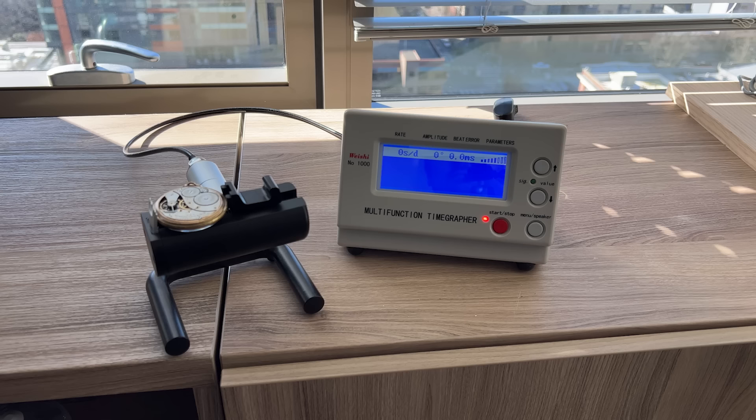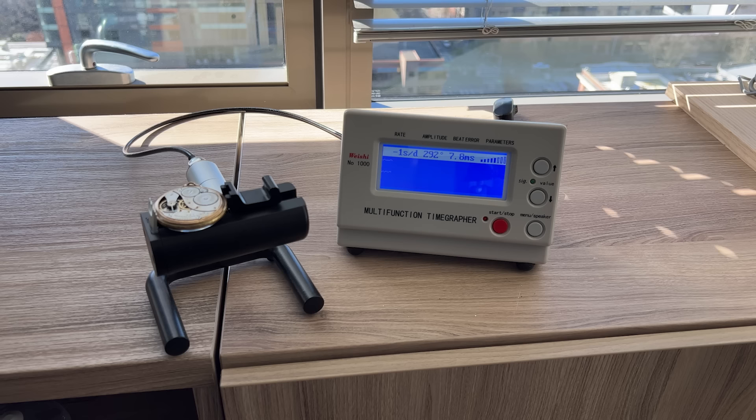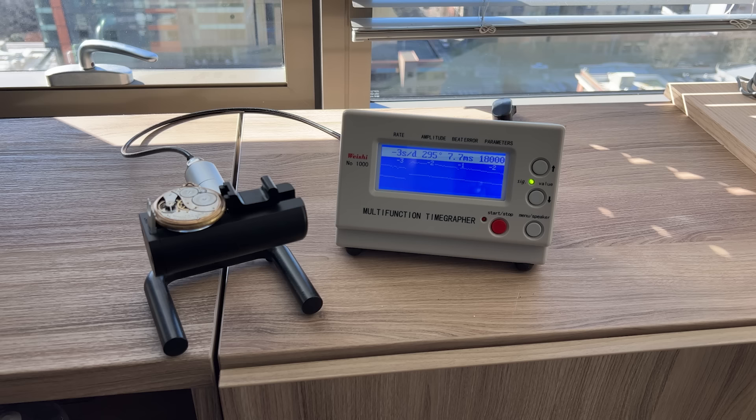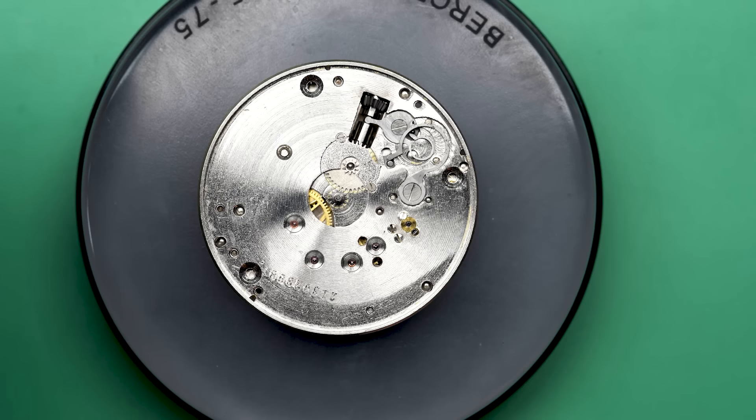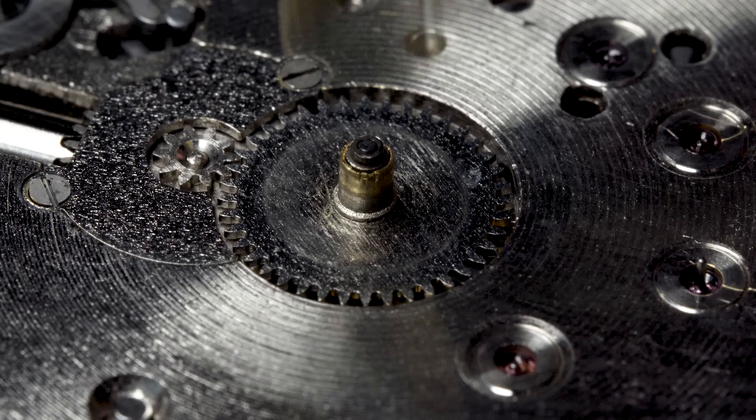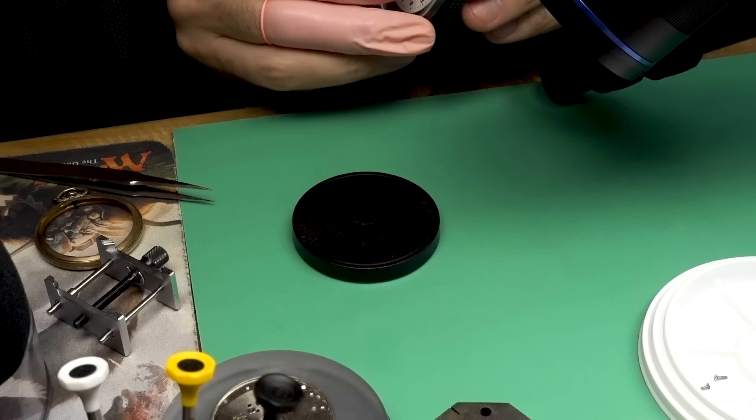Okay, let's see what it can do on the time grapher. Oh, that's so much better. It's within a couple seconds a day and the amplitude's almost 300. That is a fantastic result for this watch. Honestly, that's better than you would assume this watch would be capable of given its age and condition. So I'm thrilled to have it back to running order like that.